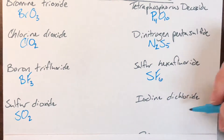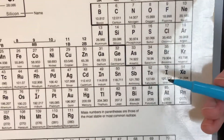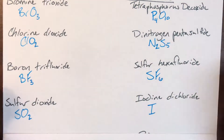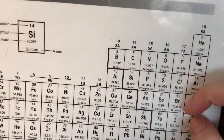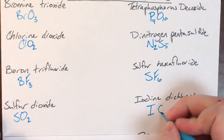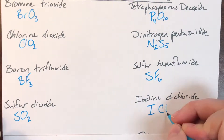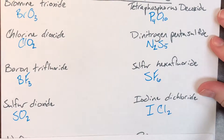Iodine dichloride. Iodine is I — no prefix means no subscript. Dichloride: chlorine is Cl, and di means 2. So ICl2 is how that would be written.